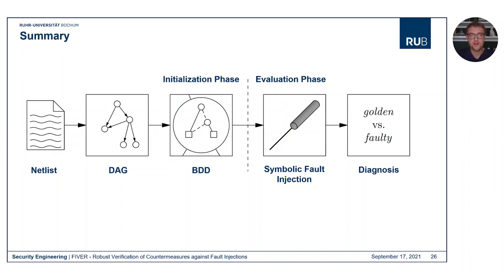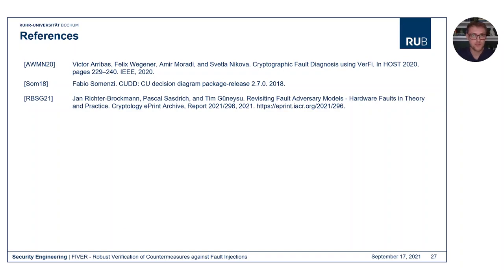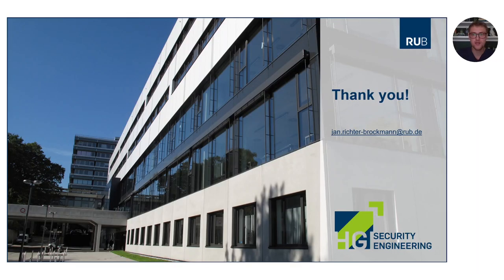To wrap up, our tool works on a gate-level netlist, passes it into a DAG, evaluates DAG nodes to create BDDs, and then exhaustively checks all possible fault combinations over all valid input vectors in the diagnosis step. This gives a tool that can check 90 million fault injections for a single round of CRAFT in under 50 minutes while testing all 2^128 input assignments — which is pretty impressive. Thank you very much for watching. References are shown here; if you have any questions, do not hesitate to contact us.